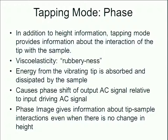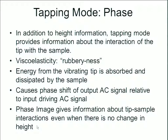In addition to height information, we can get information about the interaction of the tip with the sample, providing details of viscoelasticity and surface energy. The phase shift data will give us relative information and can tell us about the sample even when there is no change in height. If a sample is atomically smooth, we would still be able to detect differences between two different types of materials due to the phase shift lag or amplitude change from the tip-sample interaction.